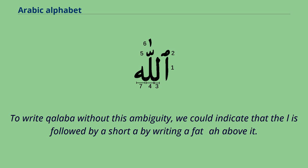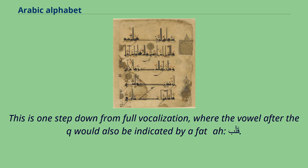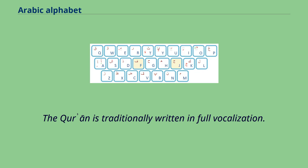To write 'qalaba' without this ambiguity, we could indicate that the L is followed by a short 'a' by writing a fatha above it. To write 'kalb', we would instead indicate that the L is followed by no vowel by marking it with a diacritic called sukun. This is one step down from full vocalization, where the vowel after the Q would also be indicated by a fatha. The Quran is traditionally written in full vocalization.